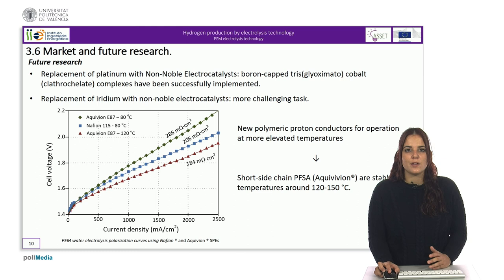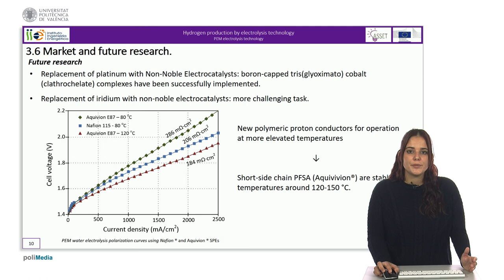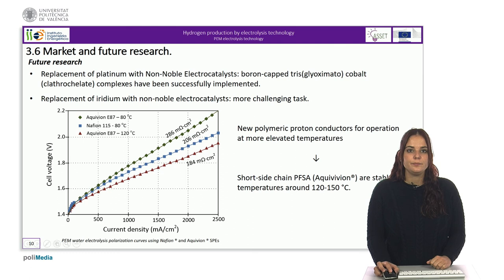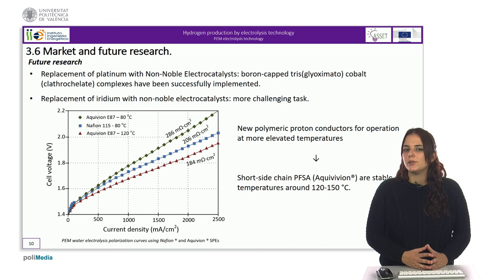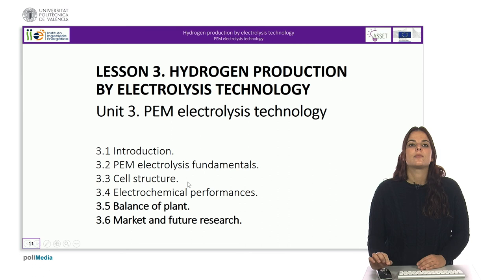Alternative perfluorosulfonated acid materials to Nafion — for example, a short side chain perfluorosulfonated acid such as Aquivion from Solvay Company — are stable at temperatures around 120–150°C. The polarization curve of Nafion 115 and Aquivion E87 can be seen in the figure. When temperature is near 120°C, the behavior of Aquivion is better than Nafion operating at 80°C. With this we conclude the unit about PIM electrolysis technology. Thank you very much for your attention.